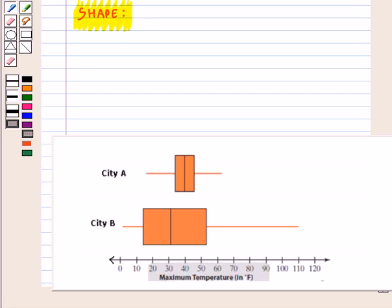Now here we will see whether the two distributions are symmetric or skewed. And in box plot we see length of the whiskers and position of median to check symmetry and skewness.